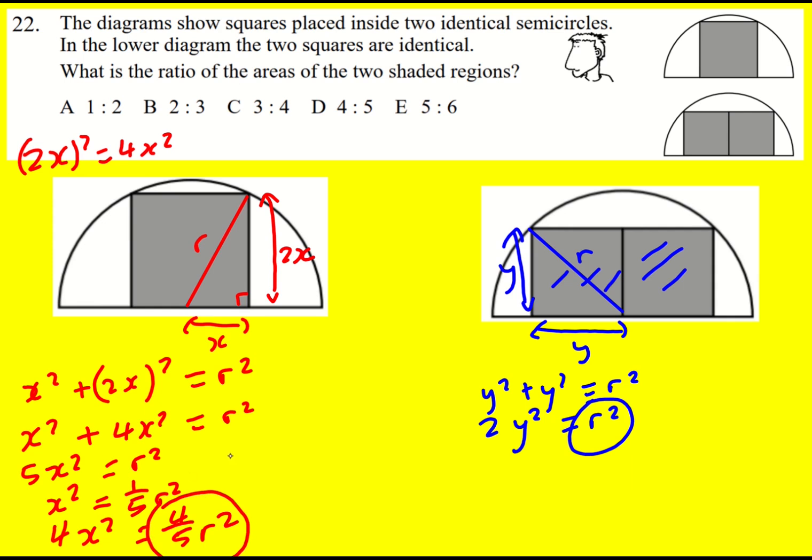My original area is 4 fifths r squared. So the ratio of the areas is 4 fifths r squared to r squared. Divide through by r squared, it's going to become 4 fifths to 1 times by 5, 4 to 5. Really nice question.